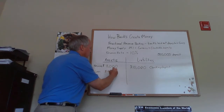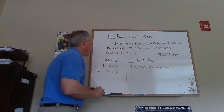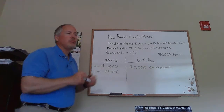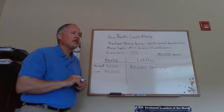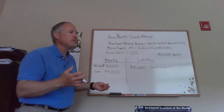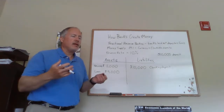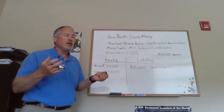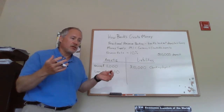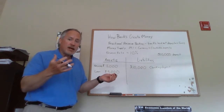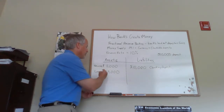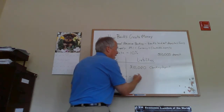The bank makes a nine-thousand-dollar loan — maybe to somebody who is getting ready to start a business. When you get a business loan, the first thing you'll likely do is open a bank account for that business and deposit that nine thousand dollars into a checking account.